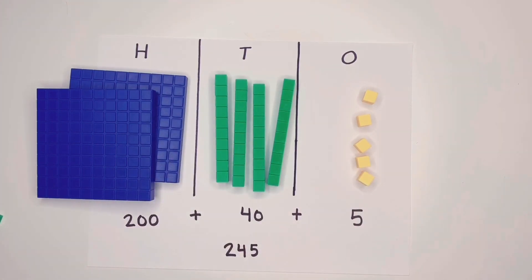We can also use the HTO chart to help us add three-digit numbers using the same representations with ones, tens, and hundreds. So let's set up a problem.